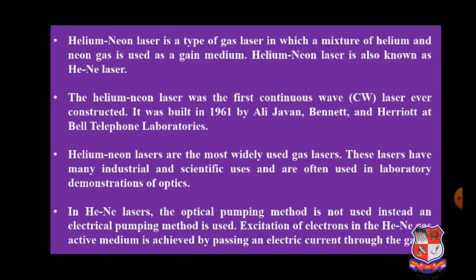The helium-neon laser is also known as the HeNe laser in acronym form. It was the first continuous wave (CW) laser ever constructed, built in 1961 by Javan, Bennett, and Harriet at Bell Telephone Laboratories. Helium-neon lasers are the most widely used gas lasers. They have many industrial and scientific uses and are often used in laboratory demonstrations of optics.